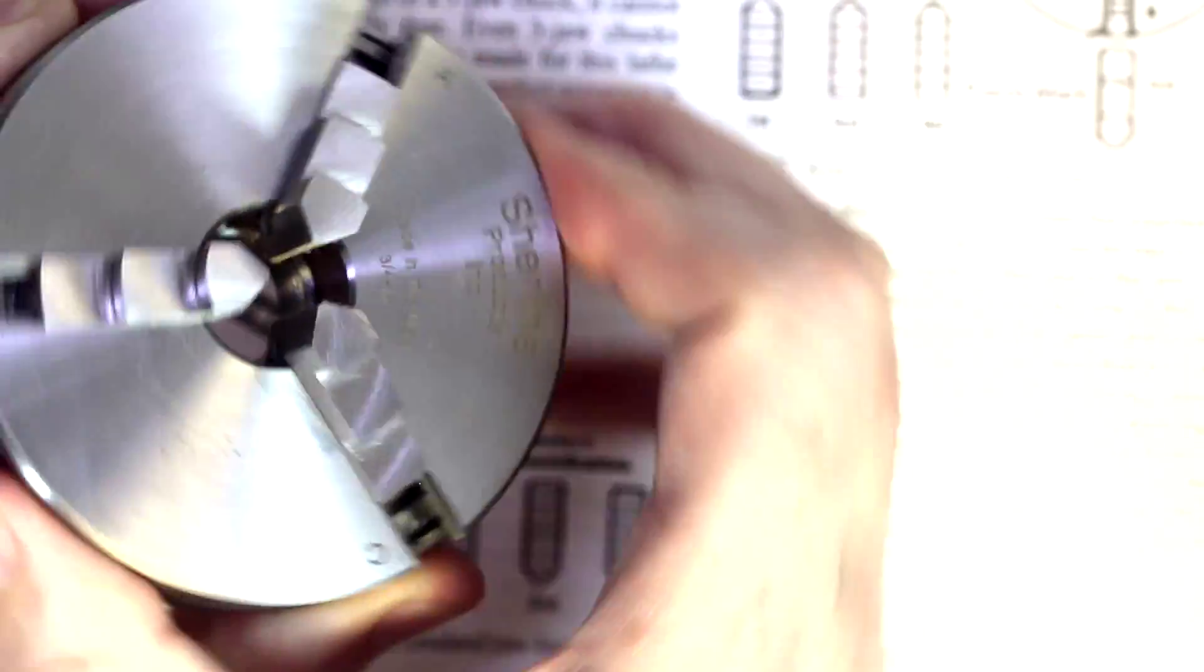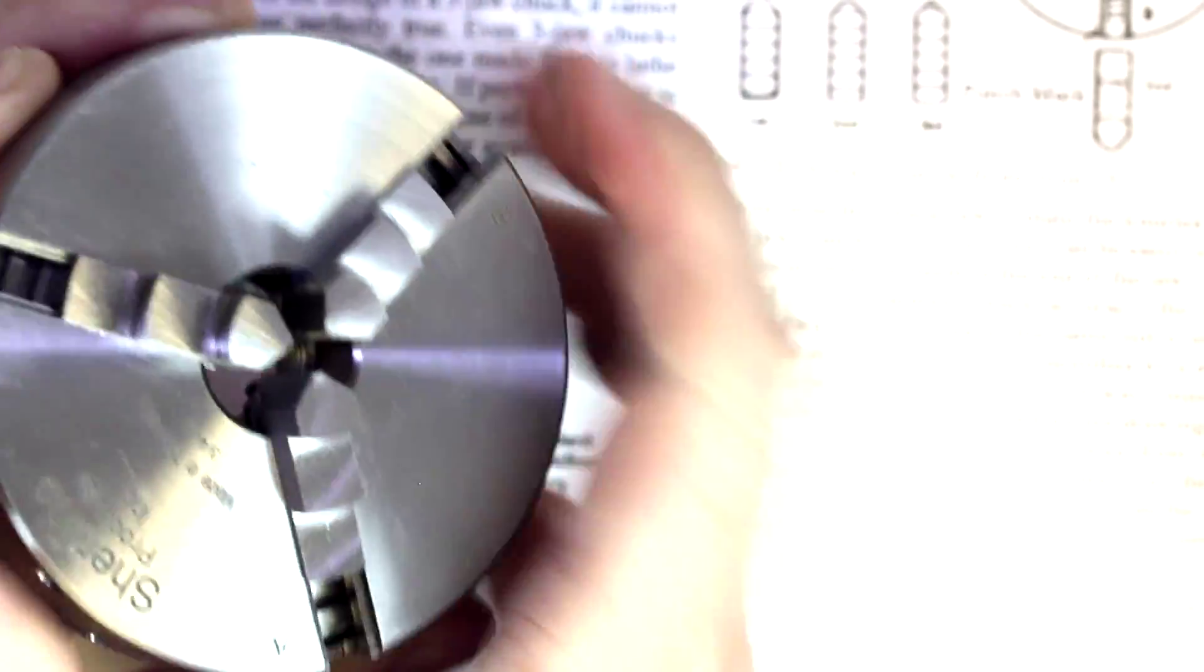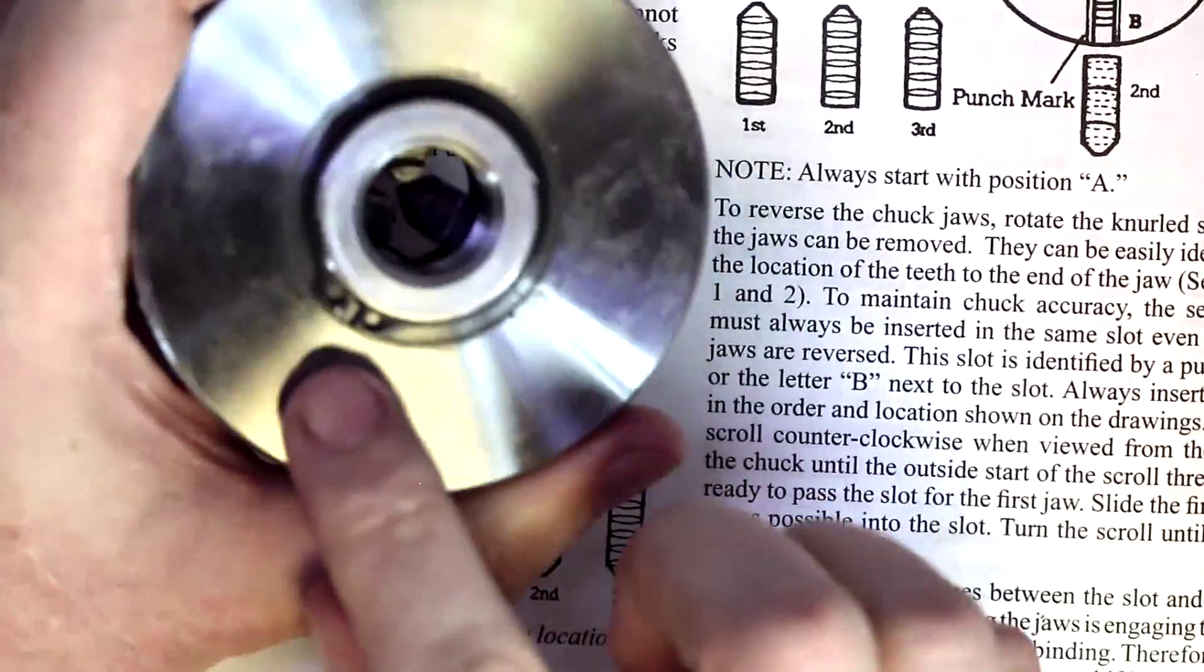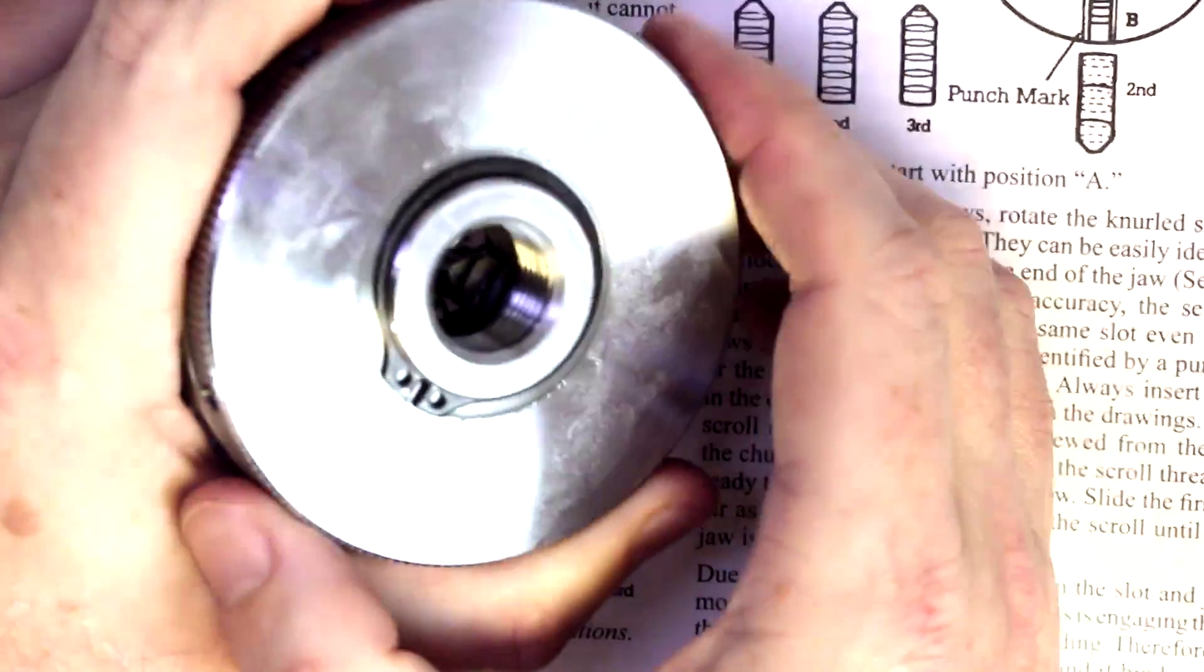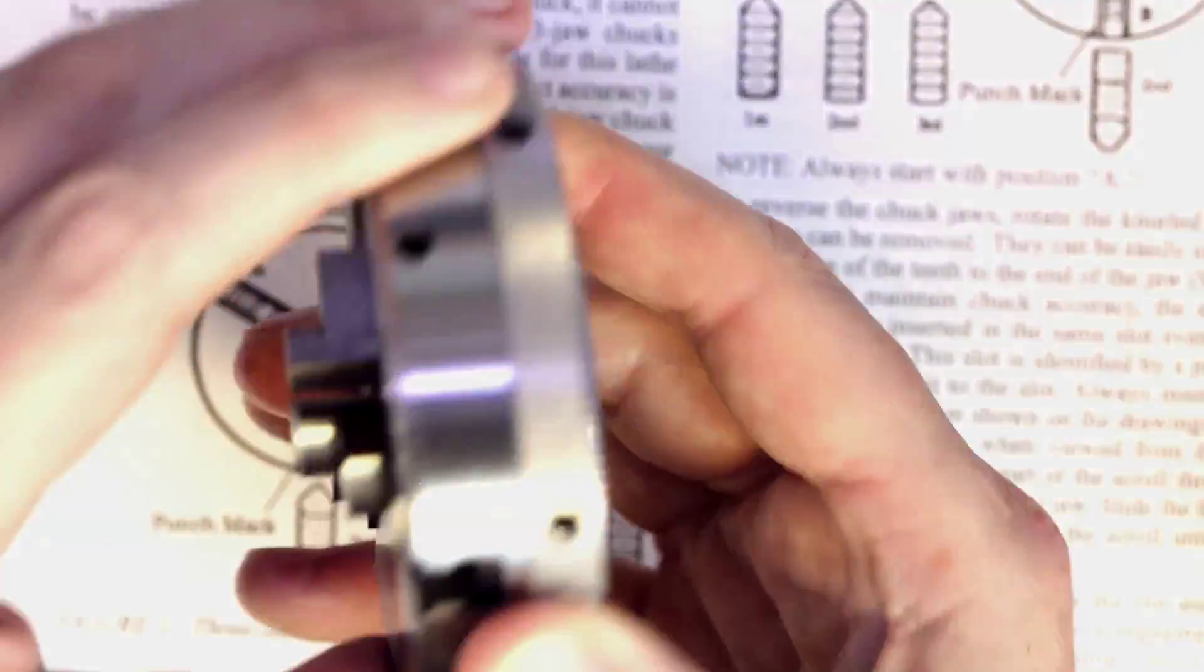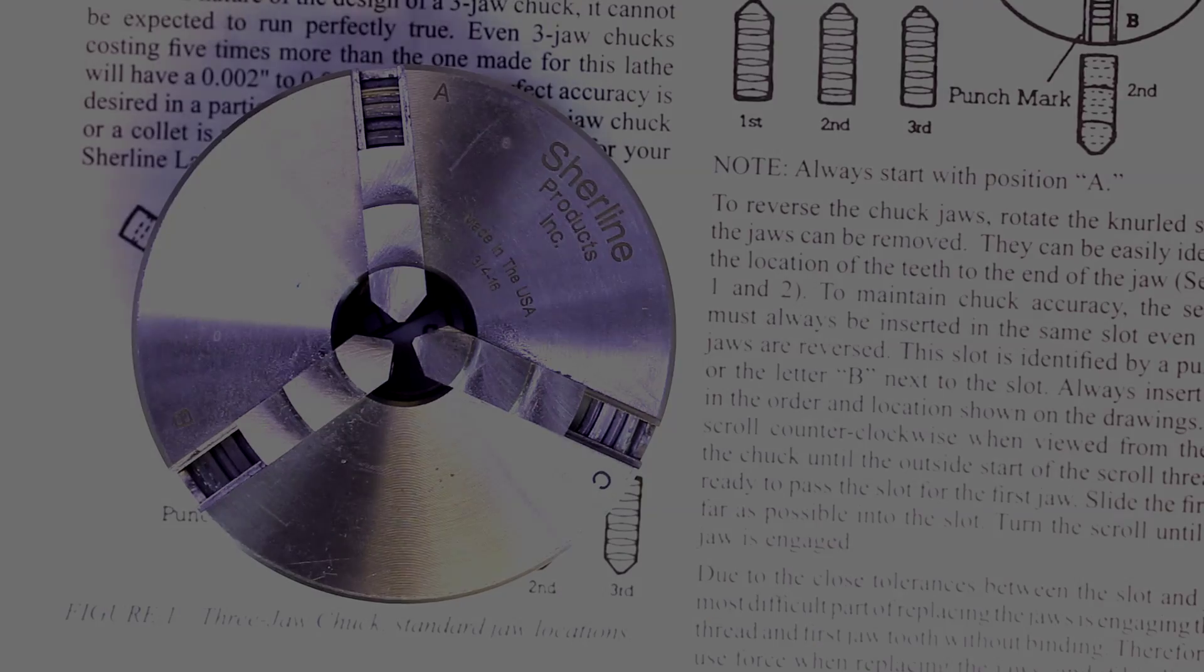If you want to fully disassemble this chuck, which I'm not going to show on this video, if there's requests for it I'll show it in another video. You just simply use some snap ring pliers, I believe, to remove this snap ring, and then the jaw should come apart fairly easily.